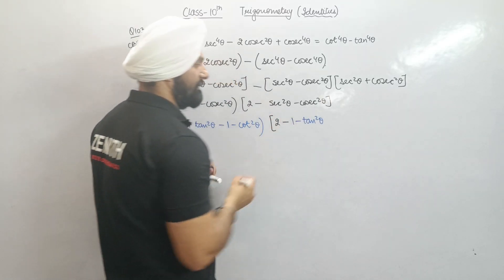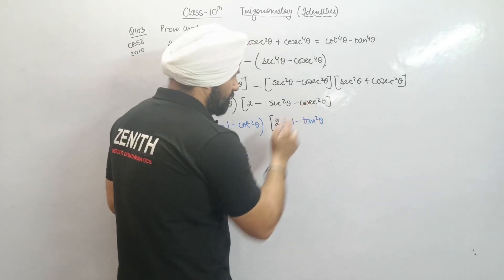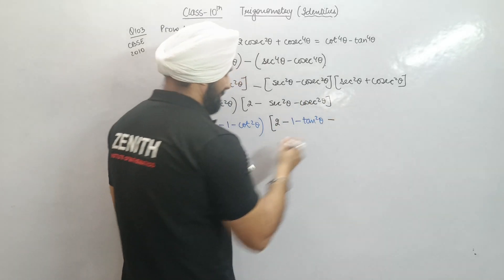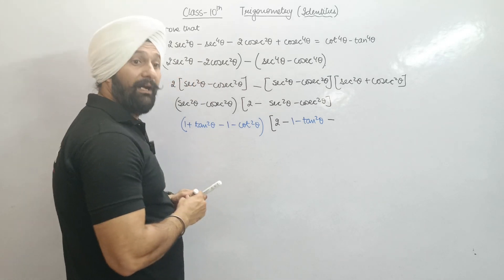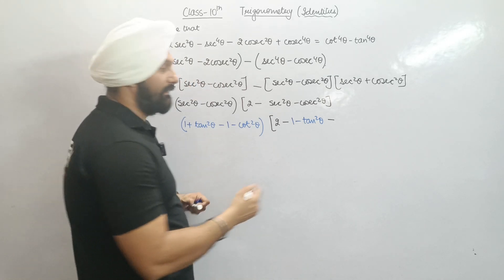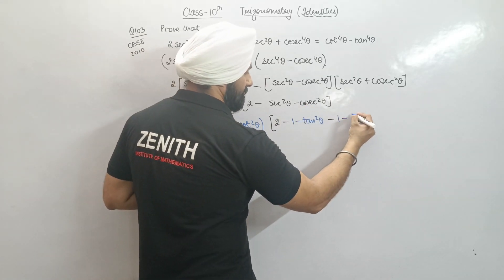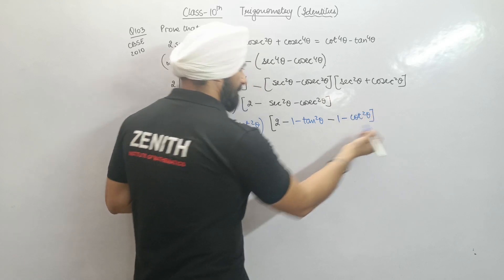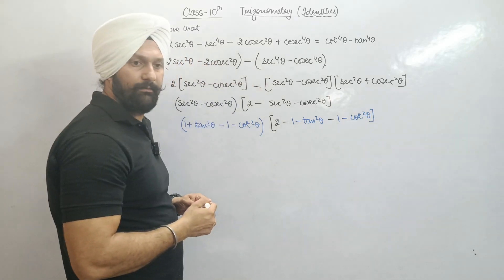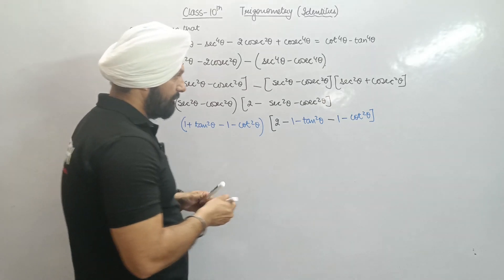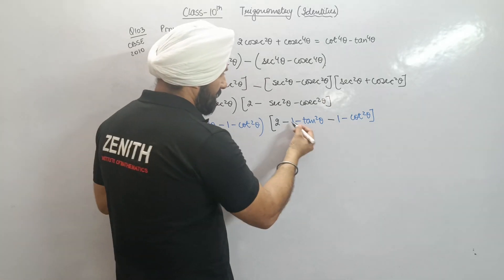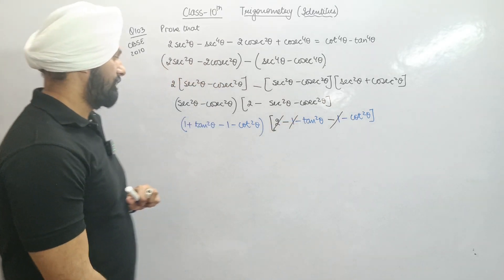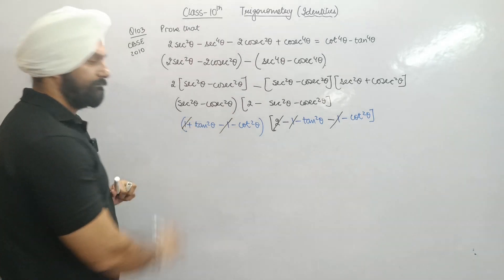Do we understand this? With minus cosec²θ equal to minus(1 plus cot²θ), and because of the minus sign outside, the ones cancel — the +1 and -1 cut, and another +1 and -1 cut. So what remains here is tan²θ minus cot²θ — note this is negative.